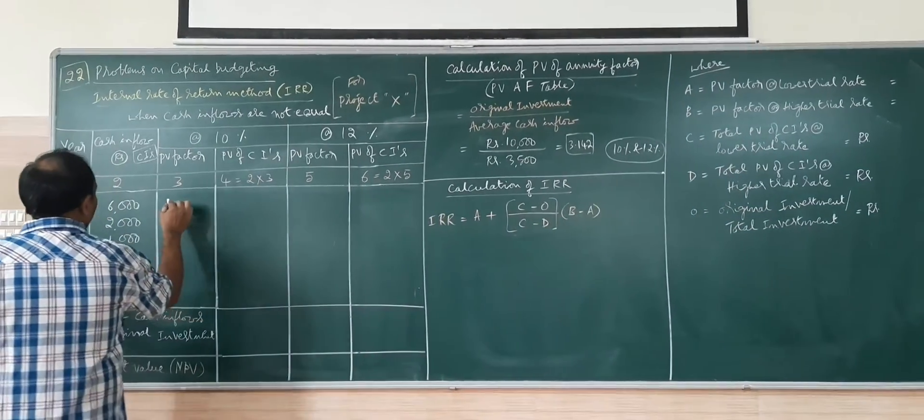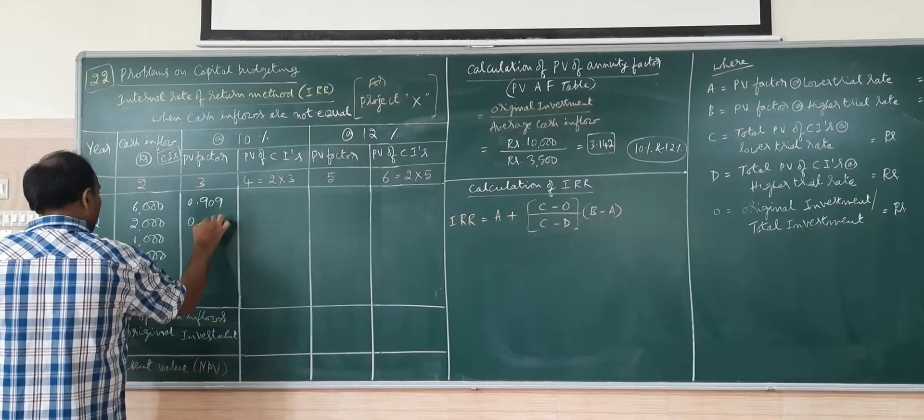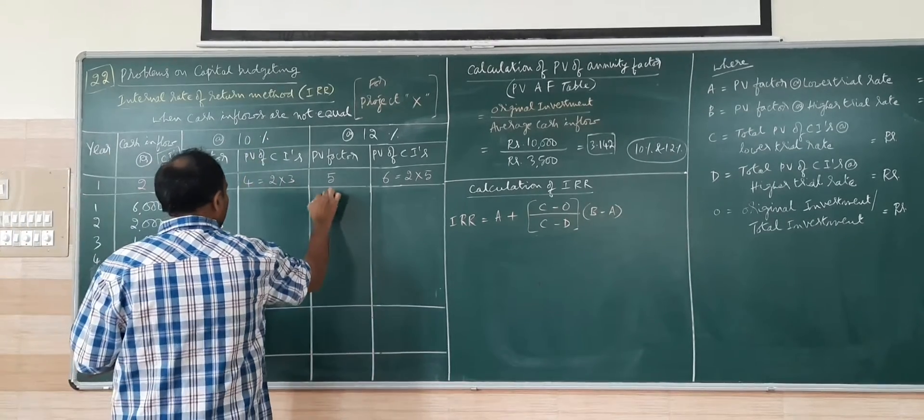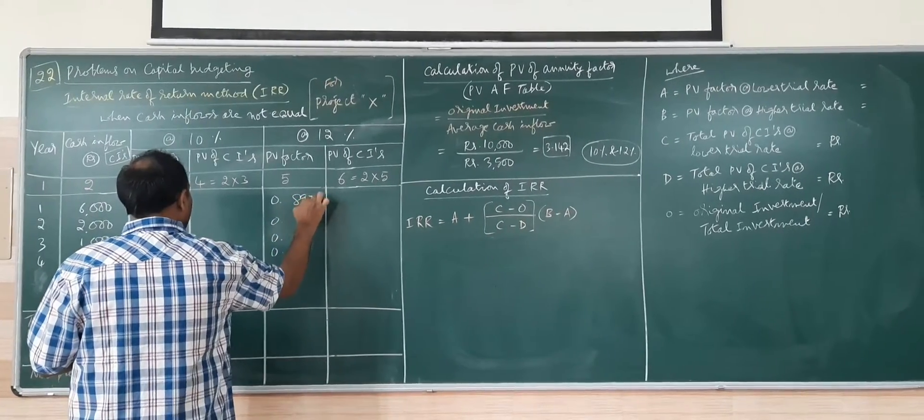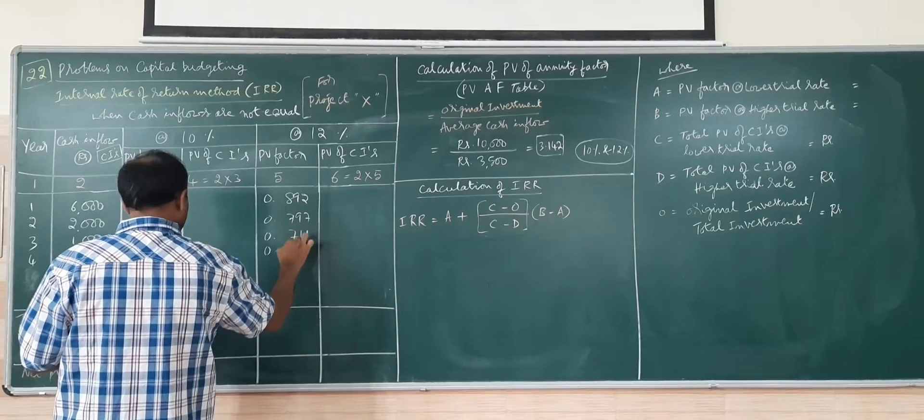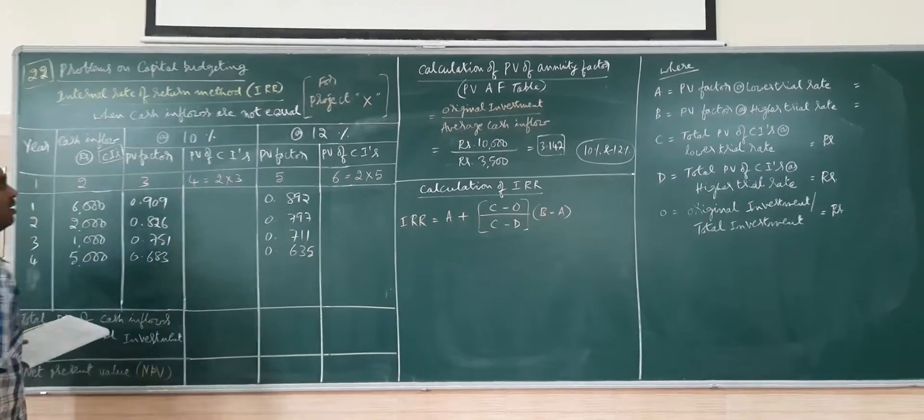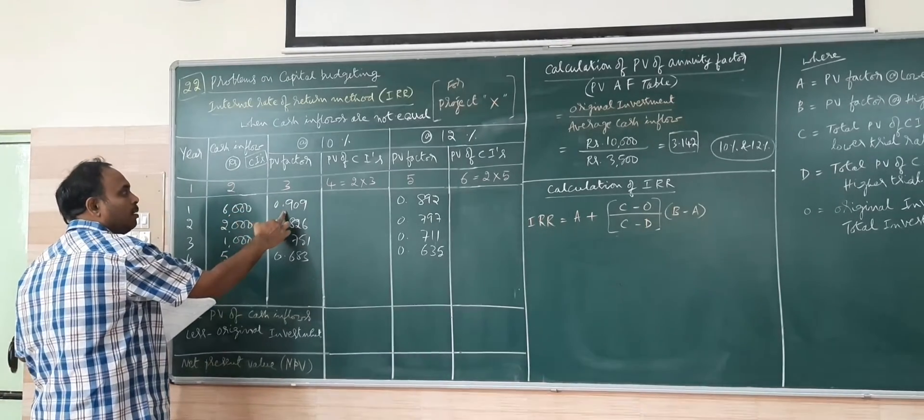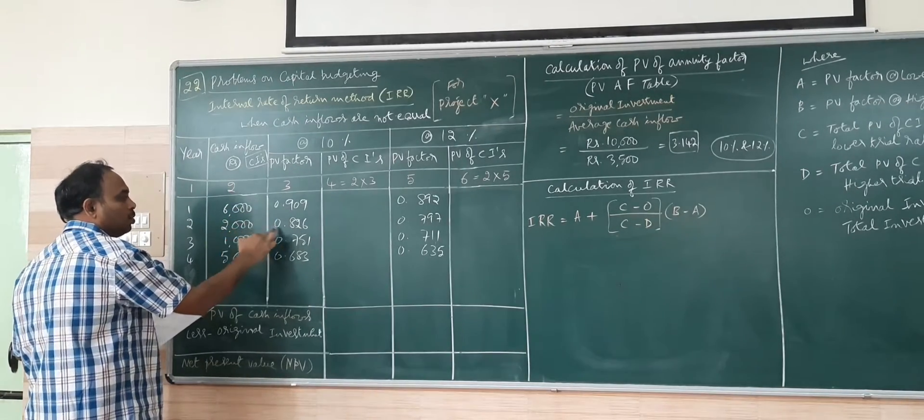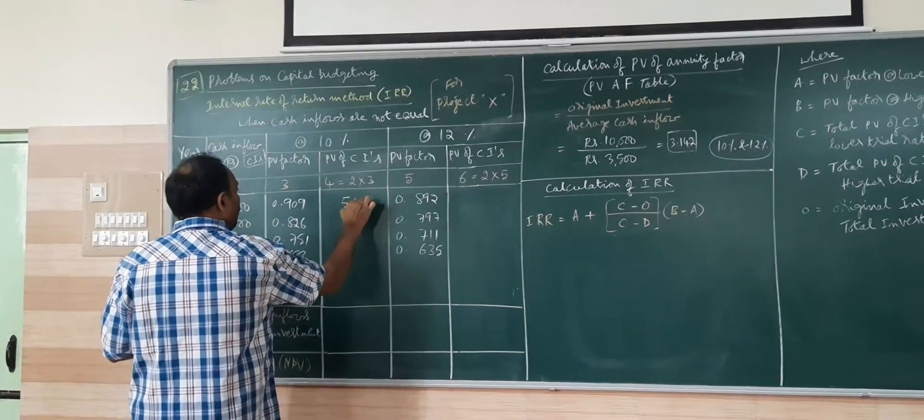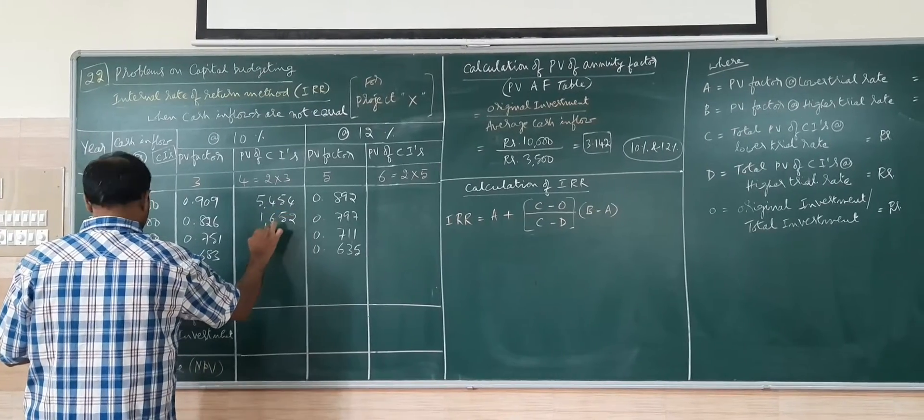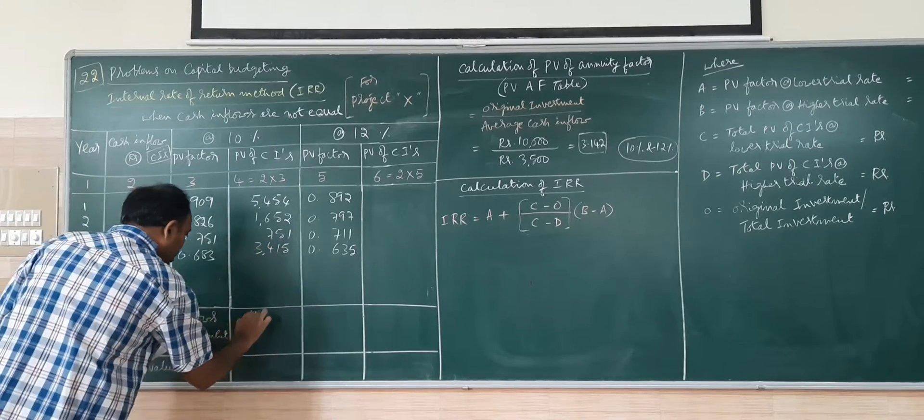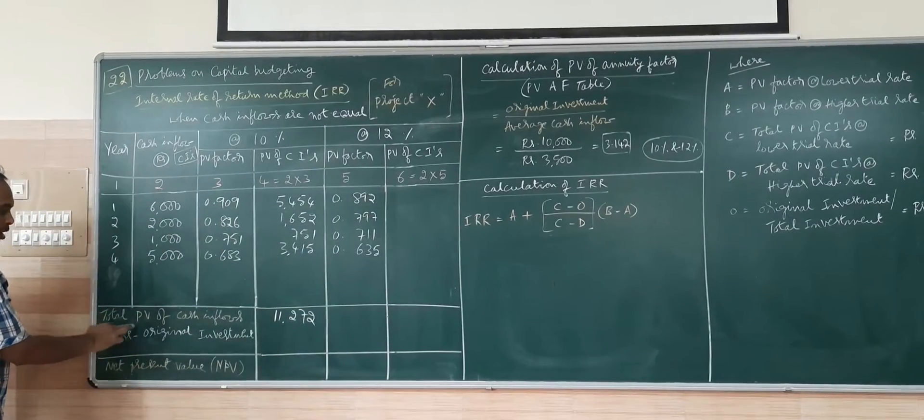At 10 percent, PV factors: 0.909, 0.826, 0.751, 0.683. Then at 12 percent: 0.892, 0.797, 0.711, 0.635. I have taken two factors, 10 percent and 12 percent. I will go for calculating the PV of cash inflows. Cash inflow multiplied by the PV factor. 6000 into PV factor, 2000 into PV factor.